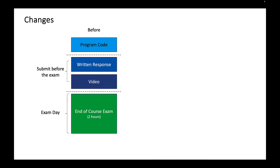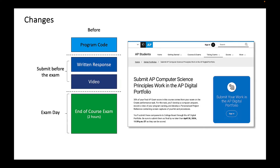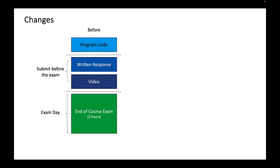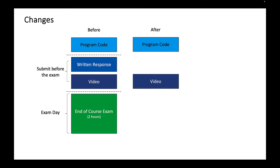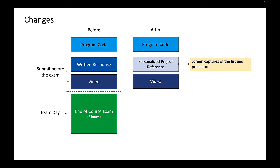Here's a quick overview of the changes. Previously, students created a program, wrote a written response, and created a video of the program functioning, then submitted the written response and the video to the AP digital portfolio. Now, students need to submit three things: the program code, the video, and instead of the written response, students submit something called the personalized project reference, which consists of screen captures of lists and procedures.